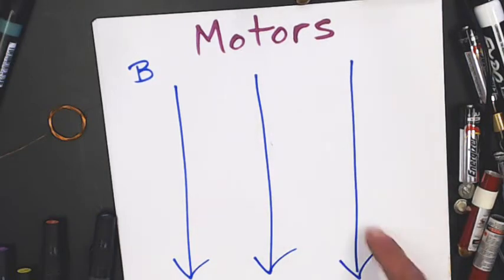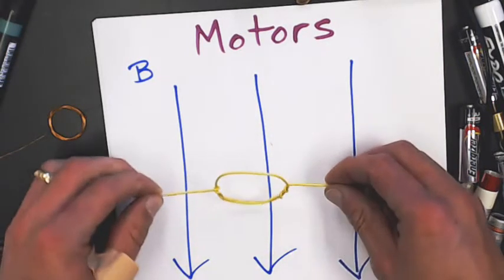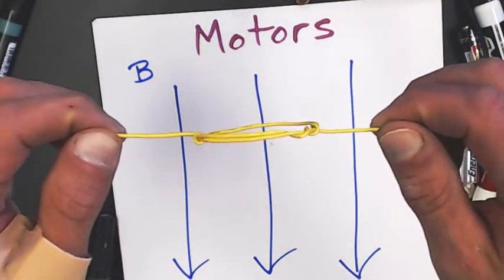Here I have a magnetic field that's pointing down to the bottom of the page. Now I have a loop of wire. It's a single loop, nothing too exciting.